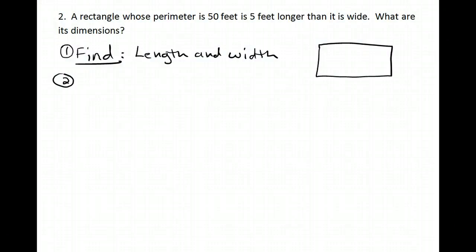Our second problem says a rectangle whose perimeter is 50 feet is 5 feet longer than it is wide. What are the dimensions? So number one, find the length and the width. And I drew a rectangle because that's what I have. Now I know the perimeter is 50 feet, but first of all, I need to get my let statement down. So let's let x equal something.